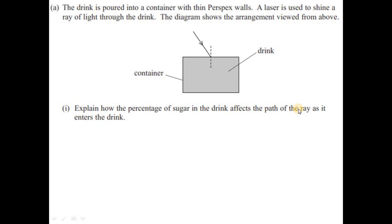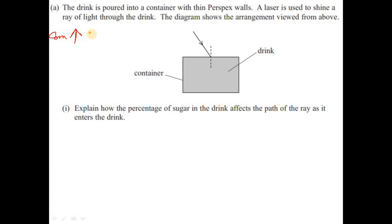A laser is used to shine a ray of light through the drink poured into a container with thin walls. The diagram shows the arrangement viewed from above. Explain how the percentage of sugar in the drink affects the path of the ray: if concentration is increased, the refractive index of the solution increases, so refraction increases.